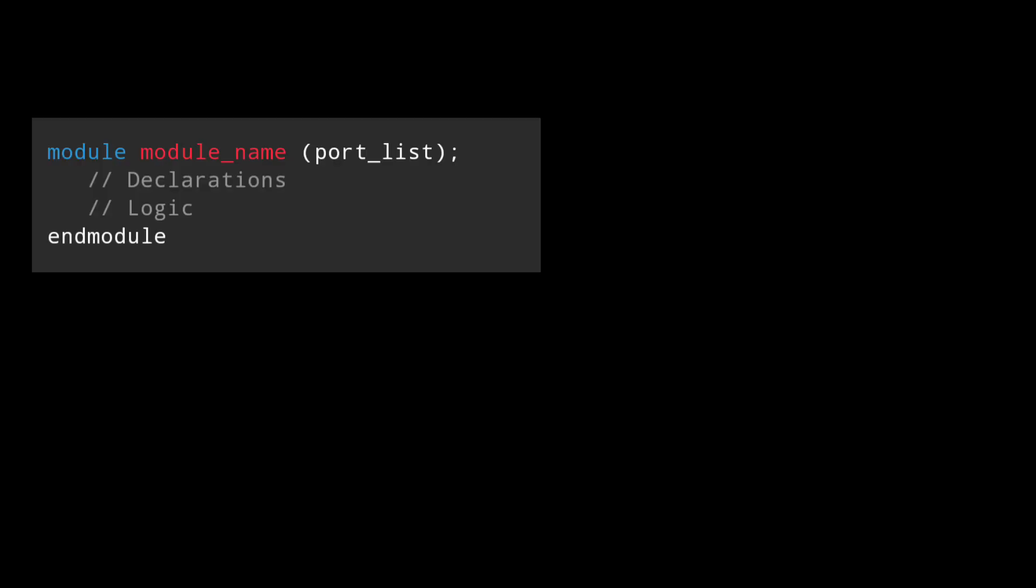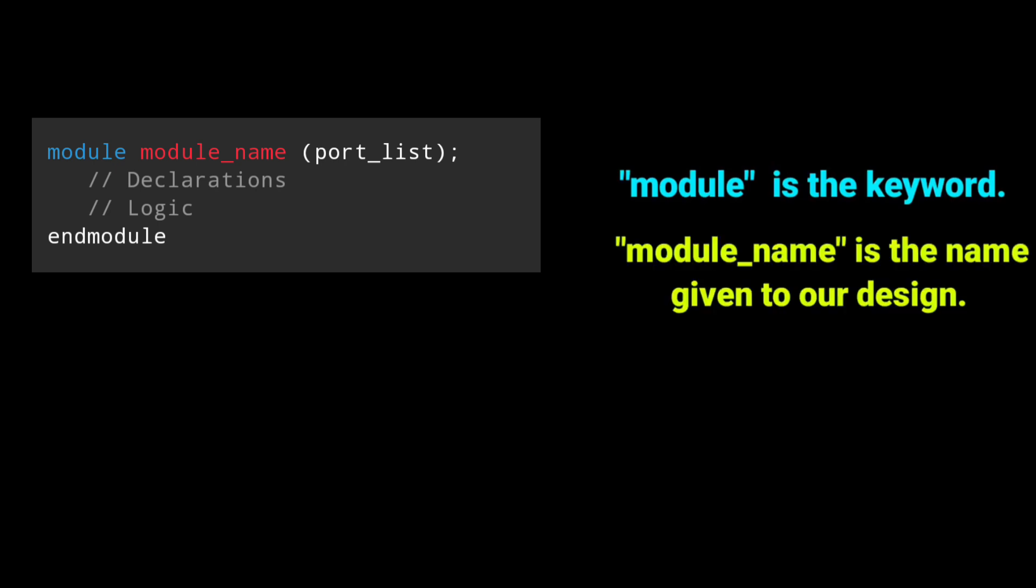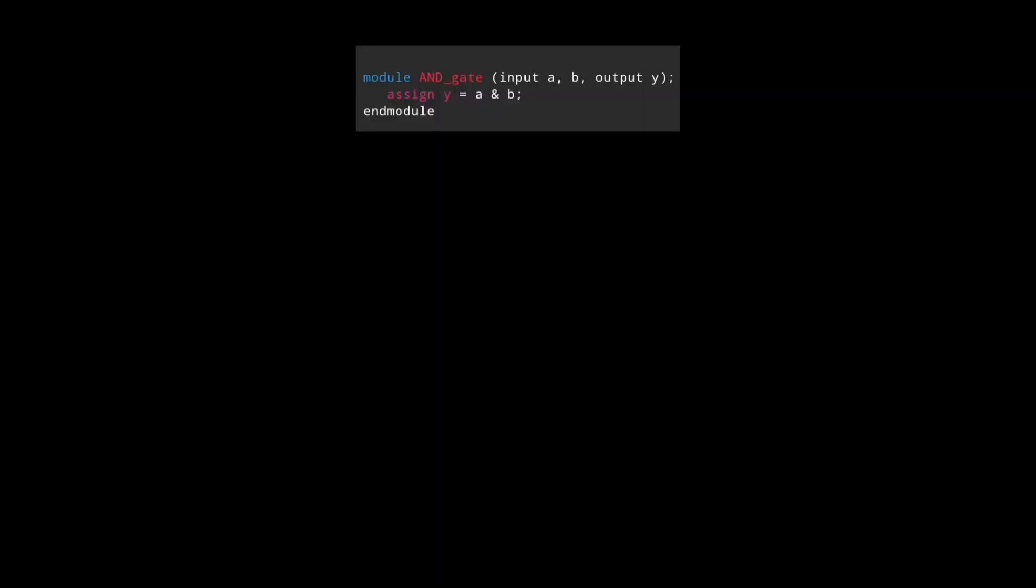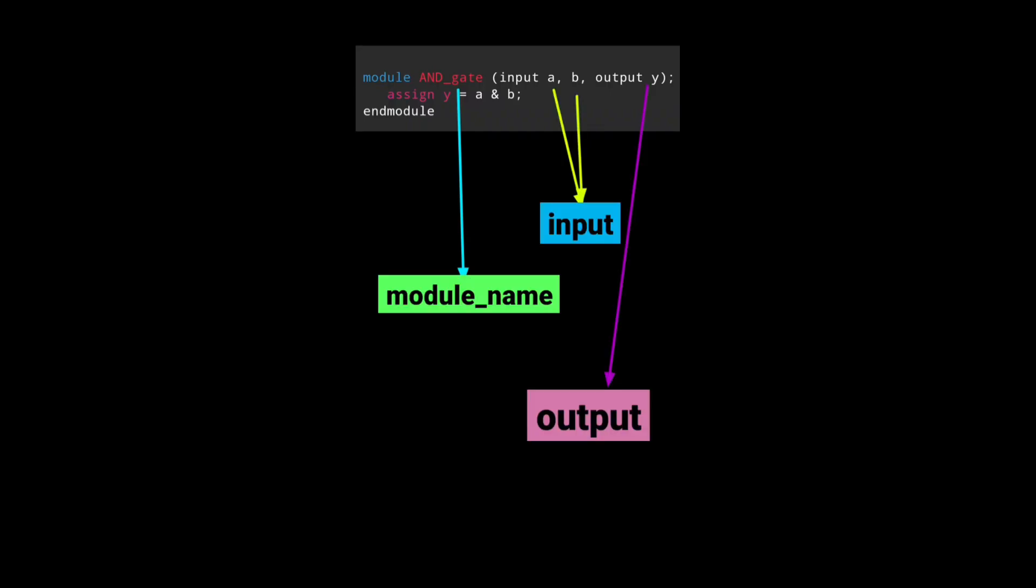This is the general syntax of a module. Module is the keyword used in Verilog, and module name is the name you give to your design. Port list contains input, output, or inout. Here, and_gate is the module name, a and b are inputs, y is our output, and the logic is y equals a and b.